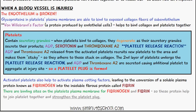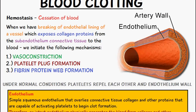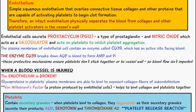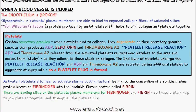The activated platelets also help to activate plasma clotting factors, leading to the conversion of the soluble plasma protein fibrinogen into the insoluble fibrous protein fibrin. There are binding sites on the platelet plasma membrane for fibrinogen and fibrin, and these proteins help join the platelets together and strengthen the platelet plug. The next videos will cover how fibrin is formed, the coagulation cascade, and a few other topics. Thank you for watching.